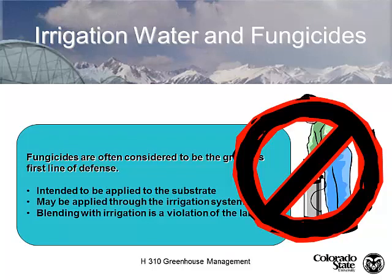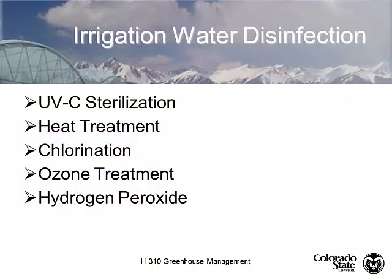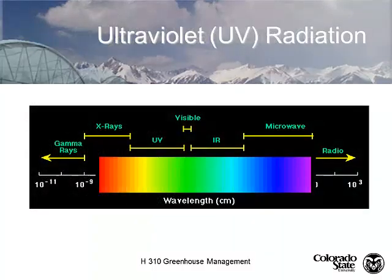For irrigation water disinfection, the systems that work best in the greenhouse are: UV-C sterilization, heat treatment, chlorine, ozone, and hydrogen peroxide.